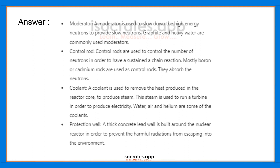Many industrial and domestic machines use a coolant — for example, cars also use a coolant to cool the engine. Similarly, the nuclear reactor produces an enormous amount of energy which is used to produce steam, but we require only a certain limit of that heat. If the reactor exceeds that limit, it creates a dangerous situation, so coolants — water, air, and helium — are used to prevent that.